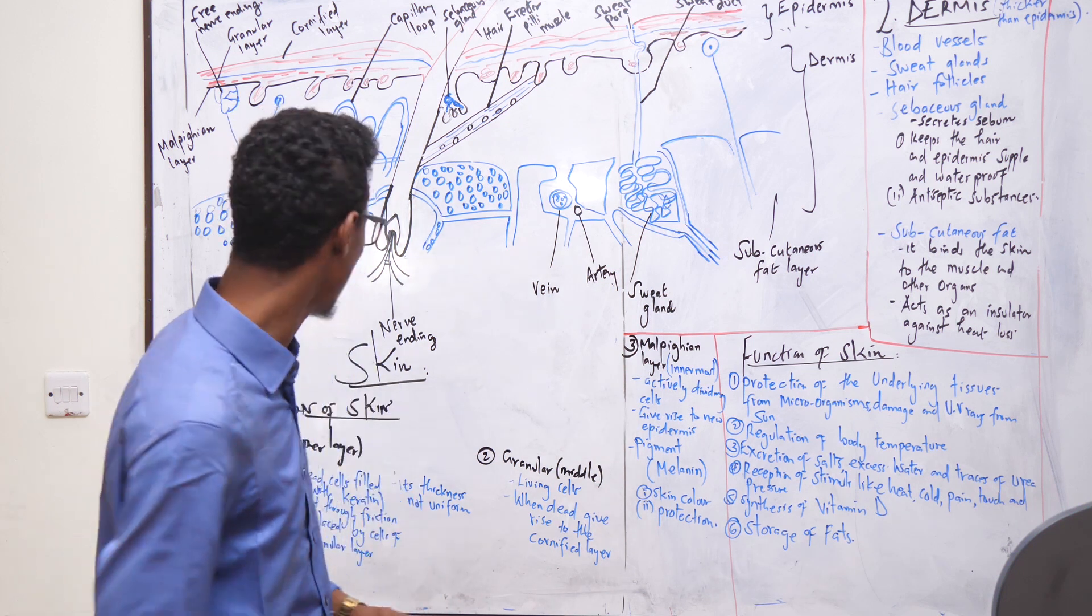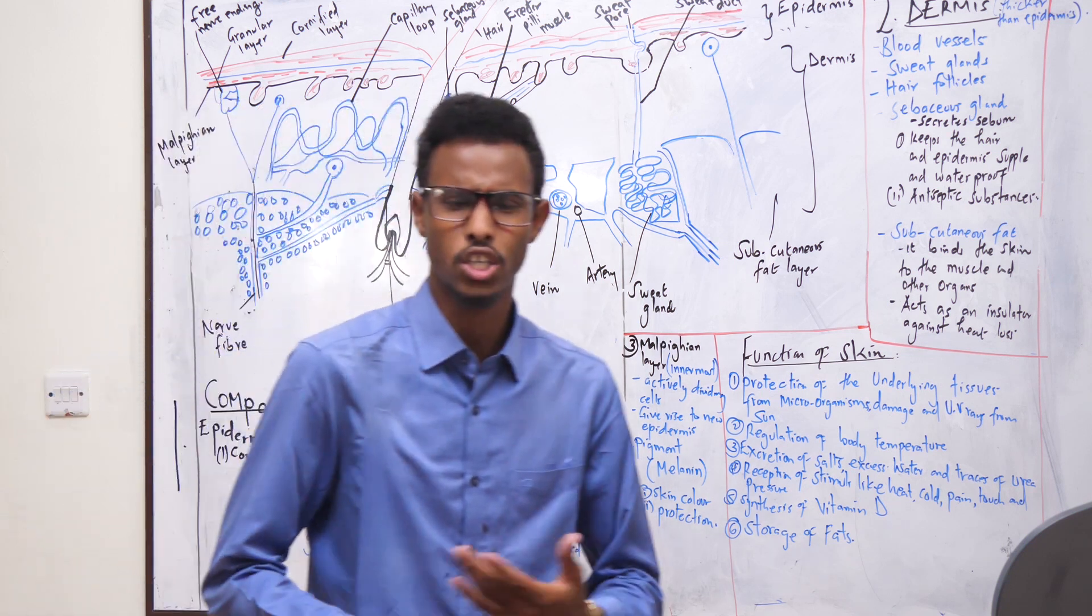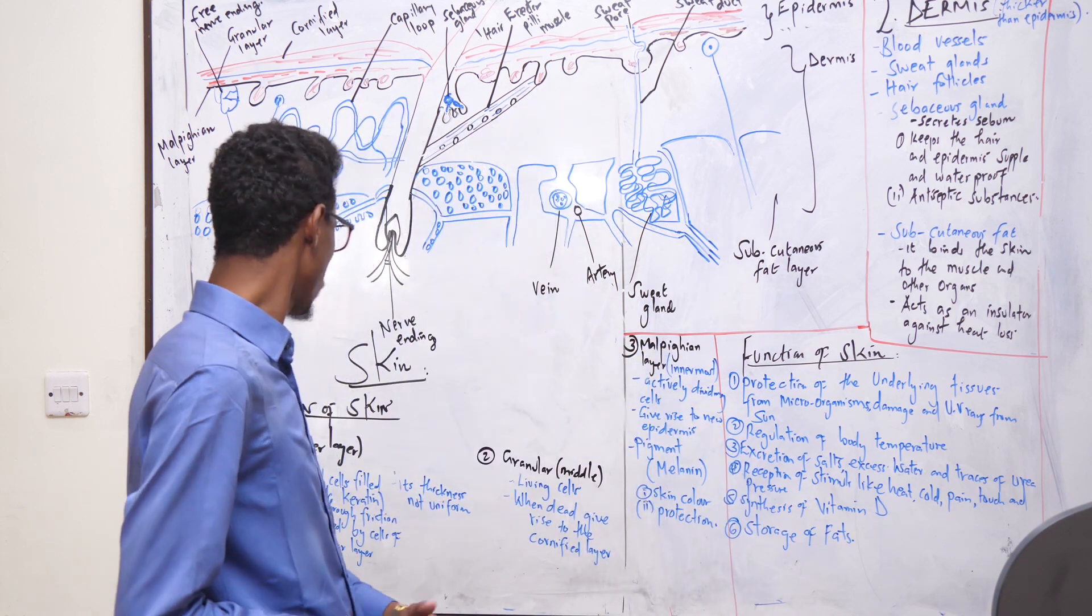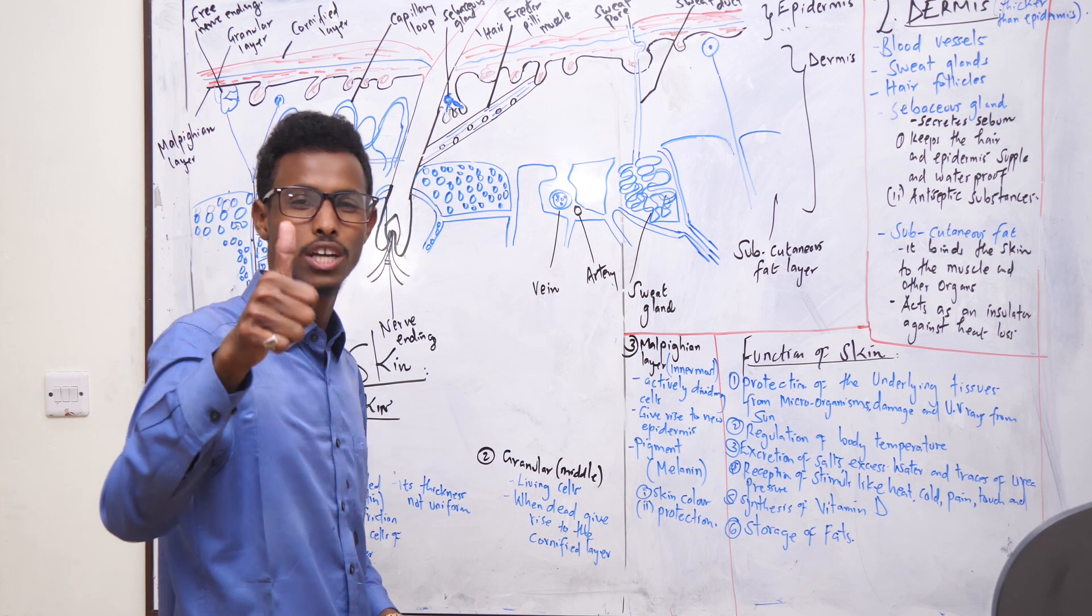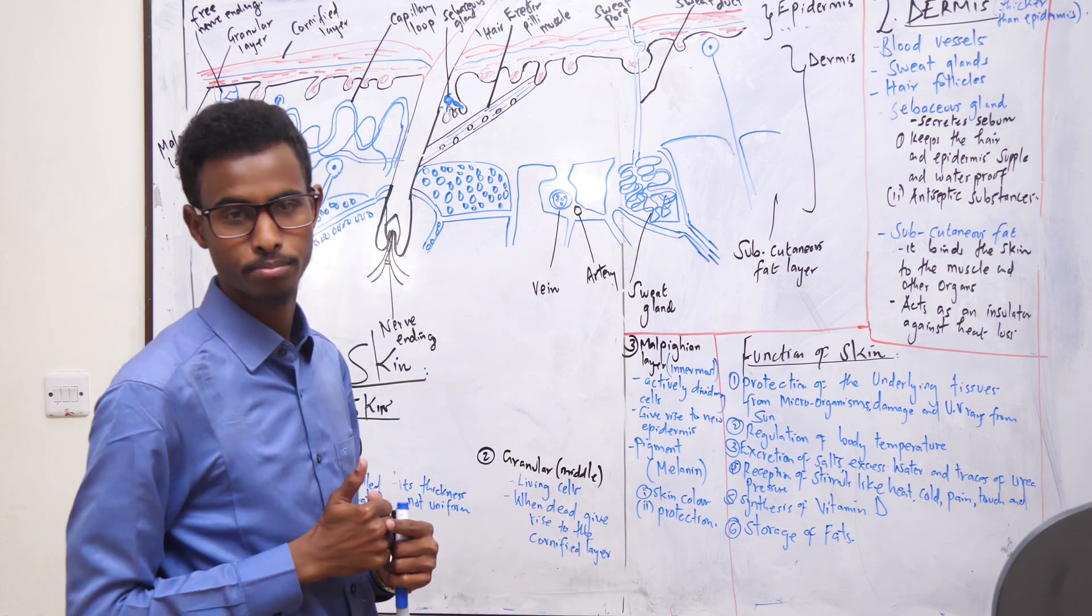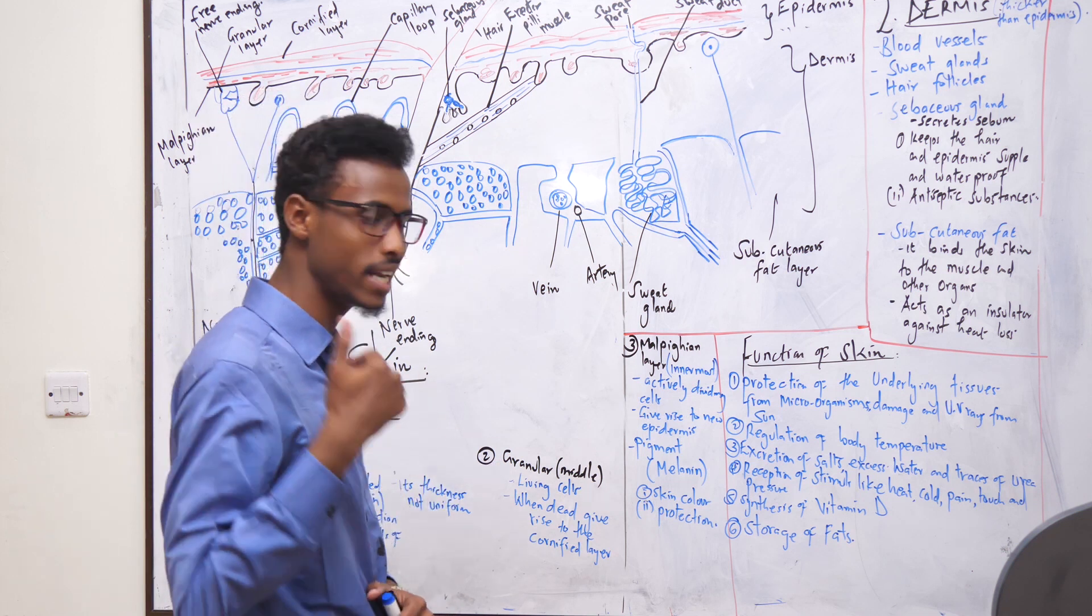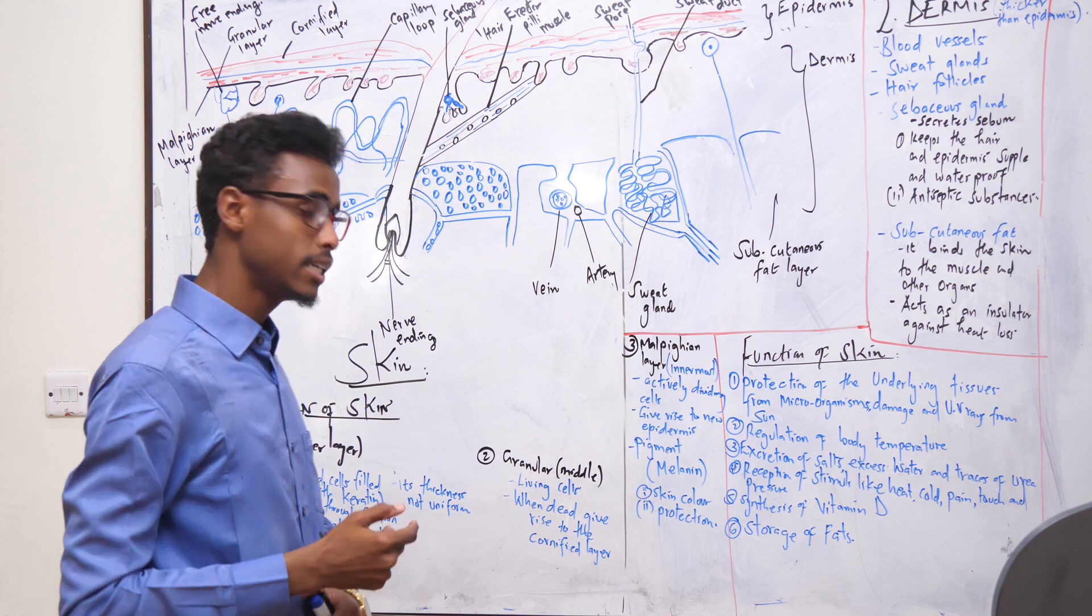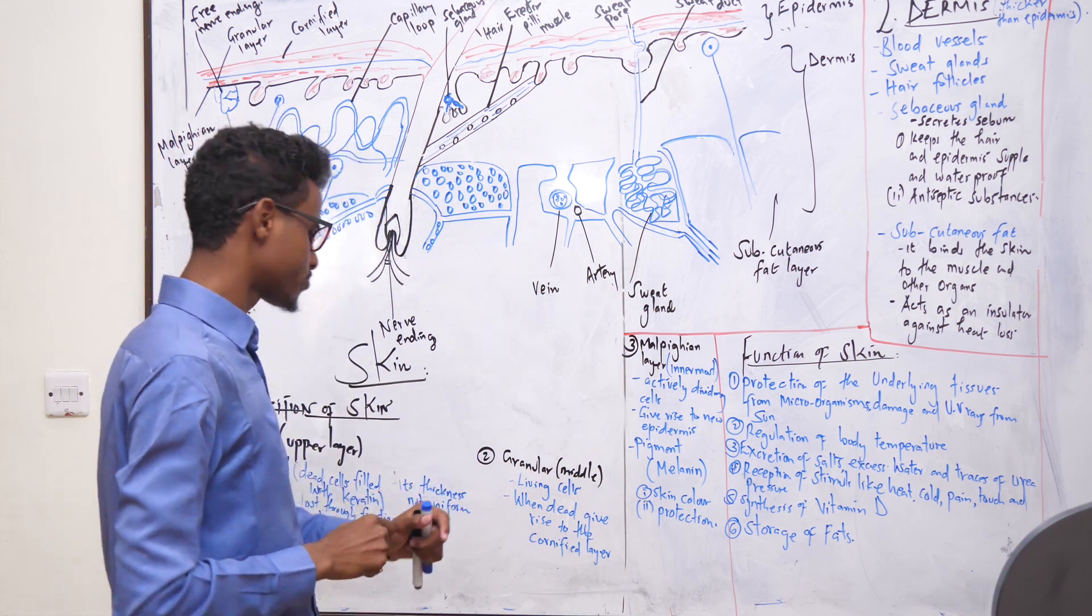Let's look at some of the functions that the cornified layer plays. One is protection against mechanical damage. It also prevents entry of disease-causing microorganisms or pathogenic inversions. Number three, it prevents excessive loss of water.